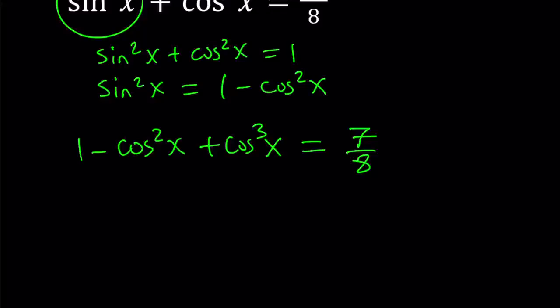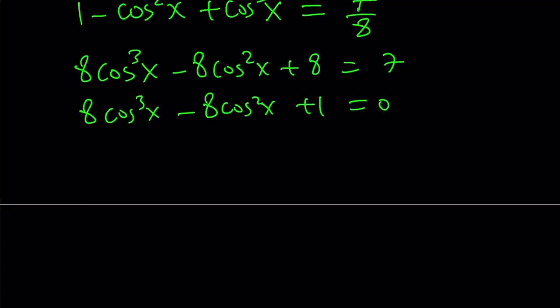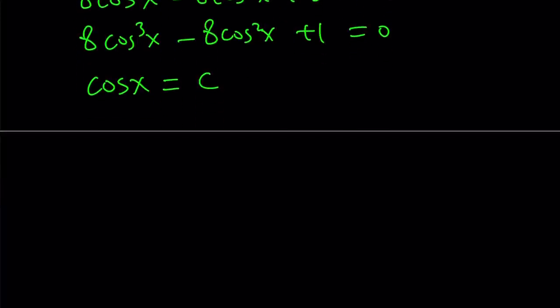Well, I want to multiply both sides by eight. I don't like fractions, you probably don't like them either, nobody likes fractions. And then when you do, you're going to get a seven. Put it over to the left-hand side, bring it over here, you're going to get plus one equals zero. Now, this is a cubic equation in cosine x. So let's go ahead and use substitution. Let's replace cosine x with c.